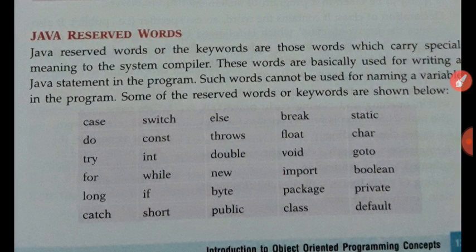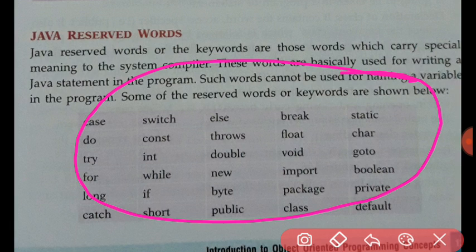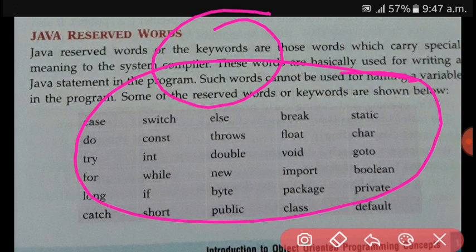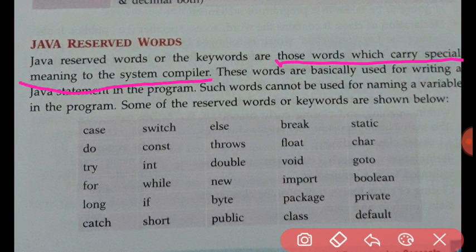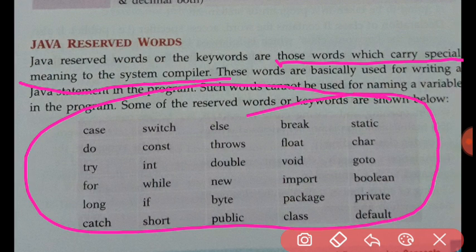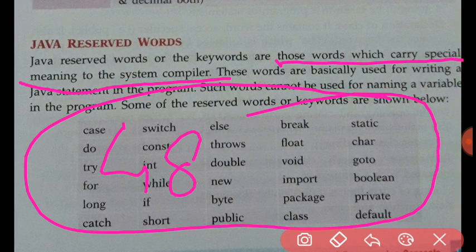Whenever you start programming, you will get familiar with all the keywords — most of them we will use. Java reserved words, also called keywords, are those words which carry some special meaning to the system compiler. These words have a special purpose and special meaning, and only for that purpose we use them. This is similar to reserving seats in a train — no one else can occupy that seat because it is reserved for a specific purpose.